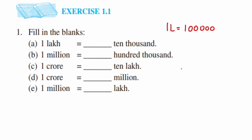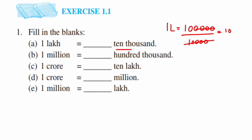Ten thousand has four zeros. So what we're going to do is divide one lakh by ten thousand. Cancel out the four zeros from the denominator and four zeros from the numerator — only ten is left. So one lakh equals ten ten-thousands.